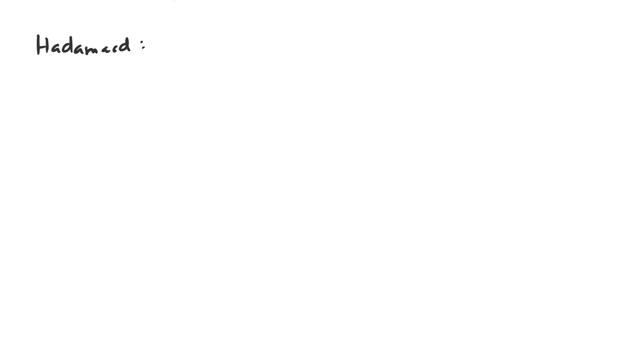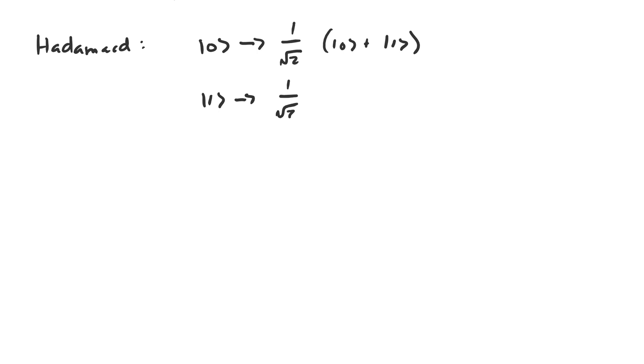Now I want to look at possibly the most popular gate in quantum computing, and that is the Hadamard gate. The Hadamard gate creates superpositions from the basis vectors |0⟩ and |1⟩. Specifically, it turns the |0⟩ vector into the uniform superposition, which is 1/√2 (|0⟩ + |1⟩), and it turns the |1⟩ vector into 1/√2 (|0⟩ − |1⟩). The Hadamard gate is represented by an H.